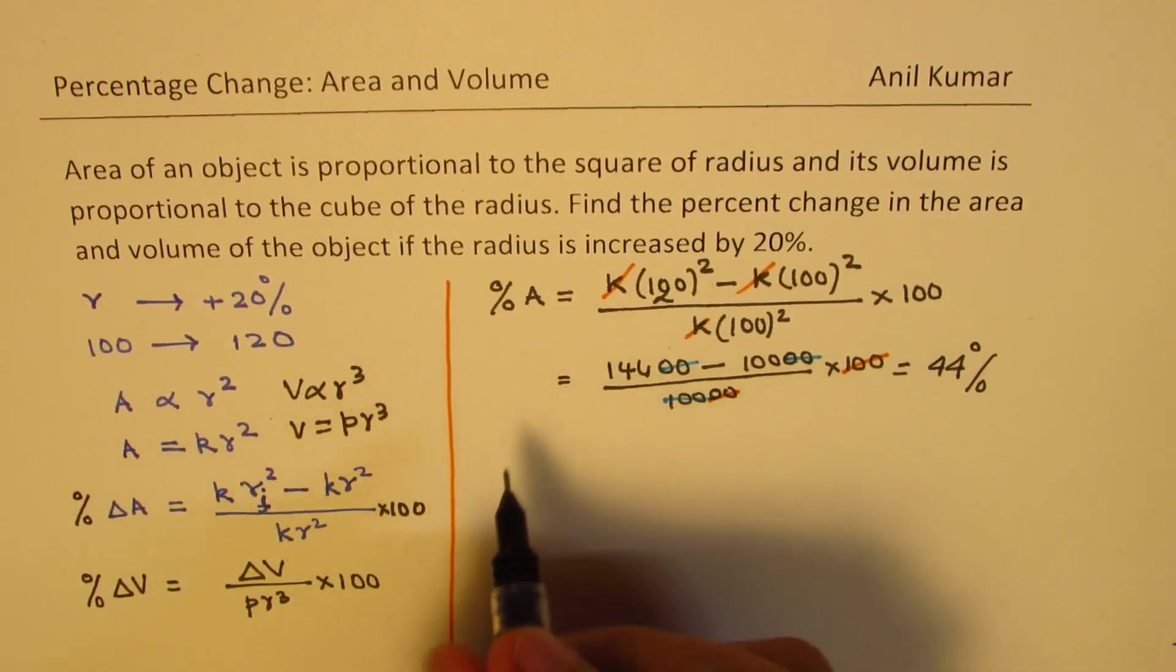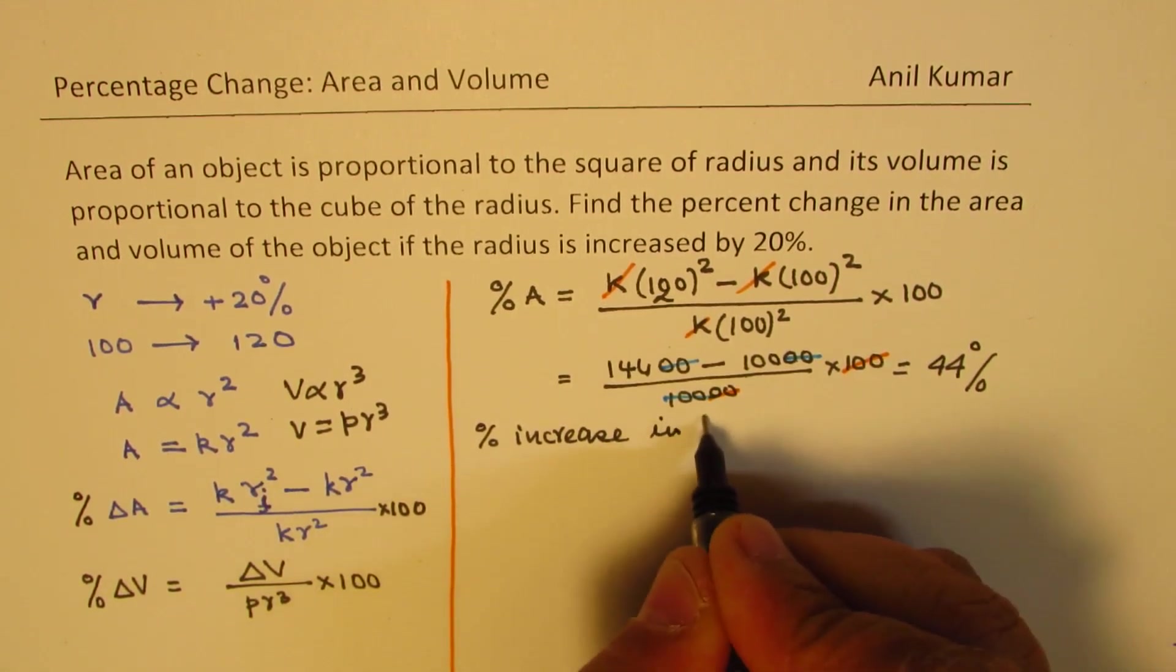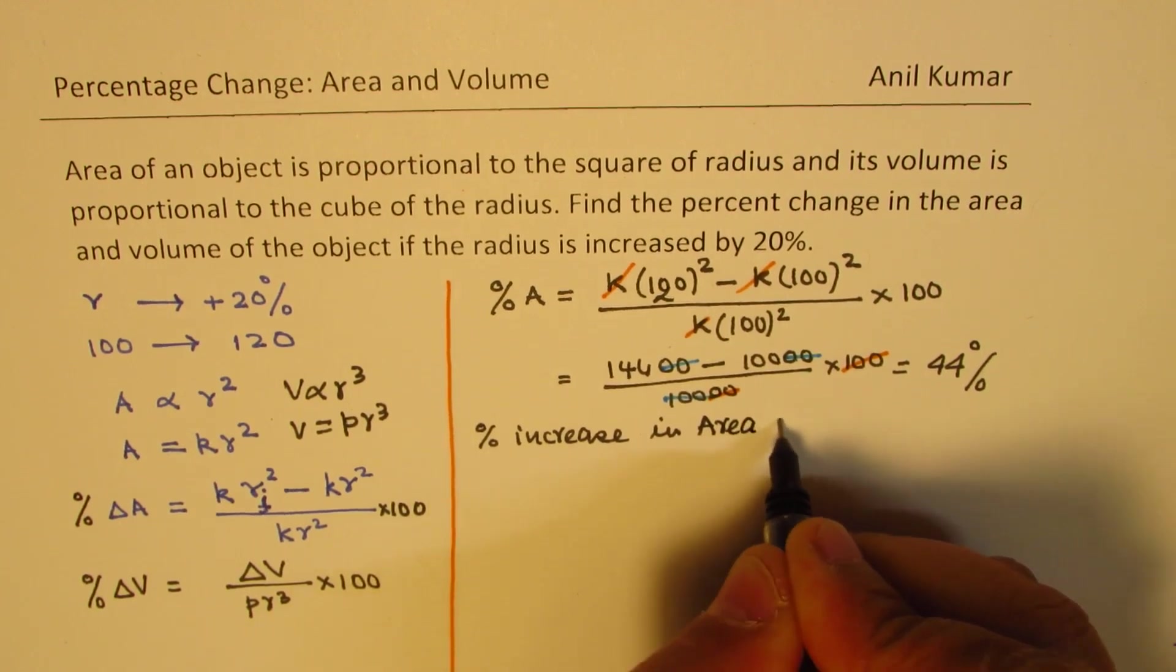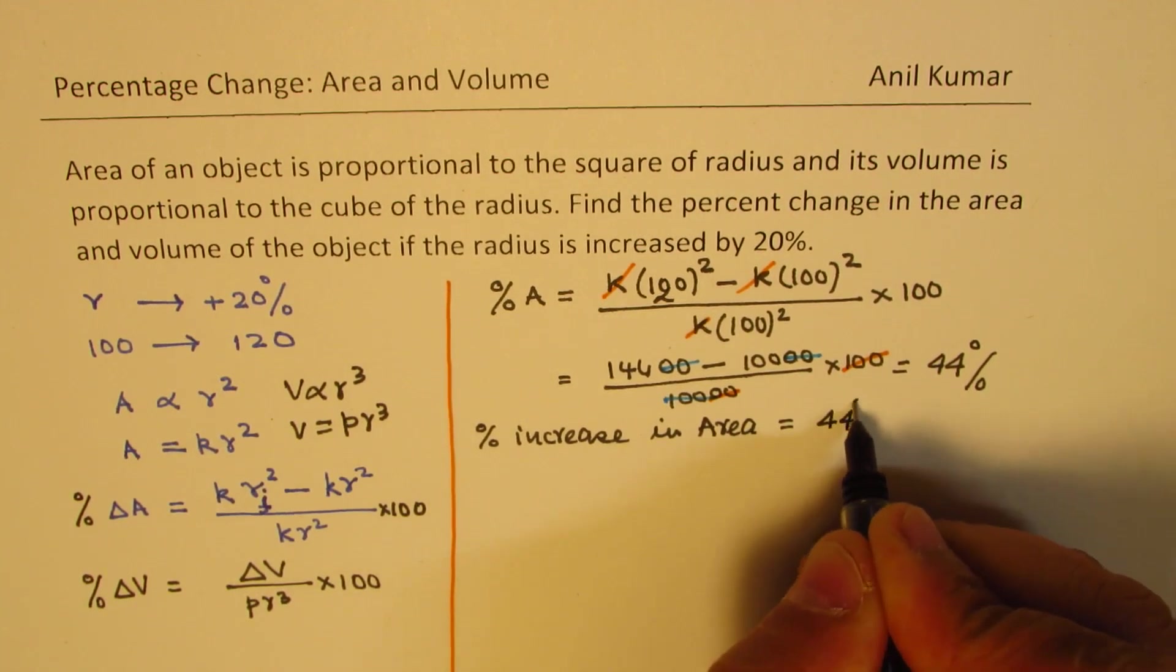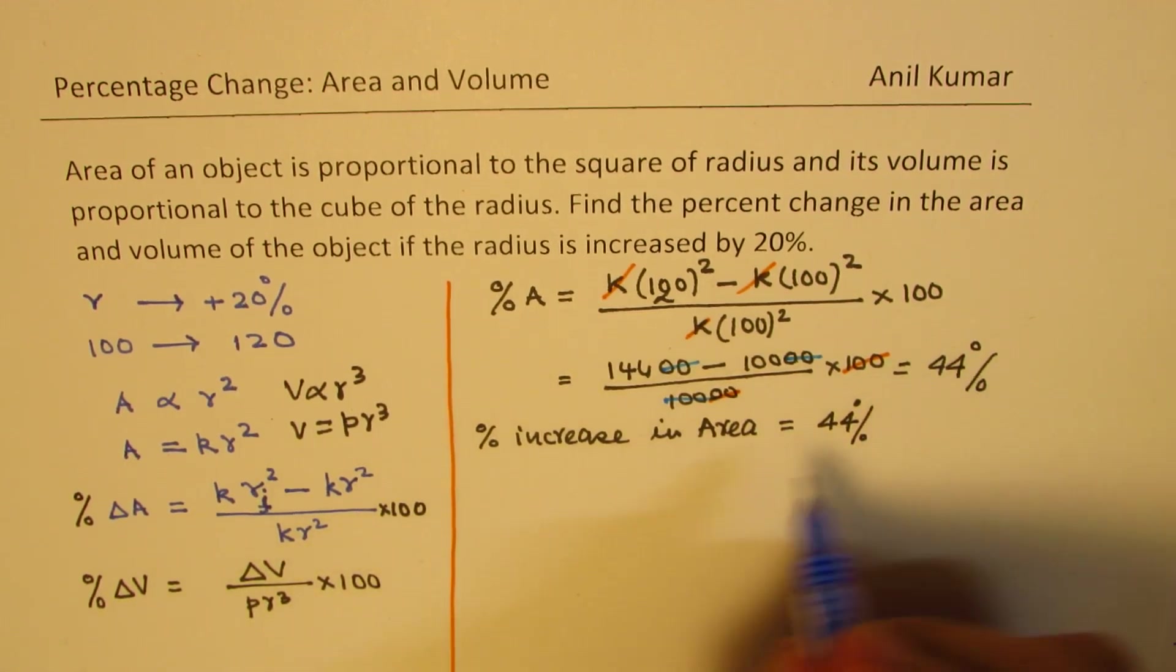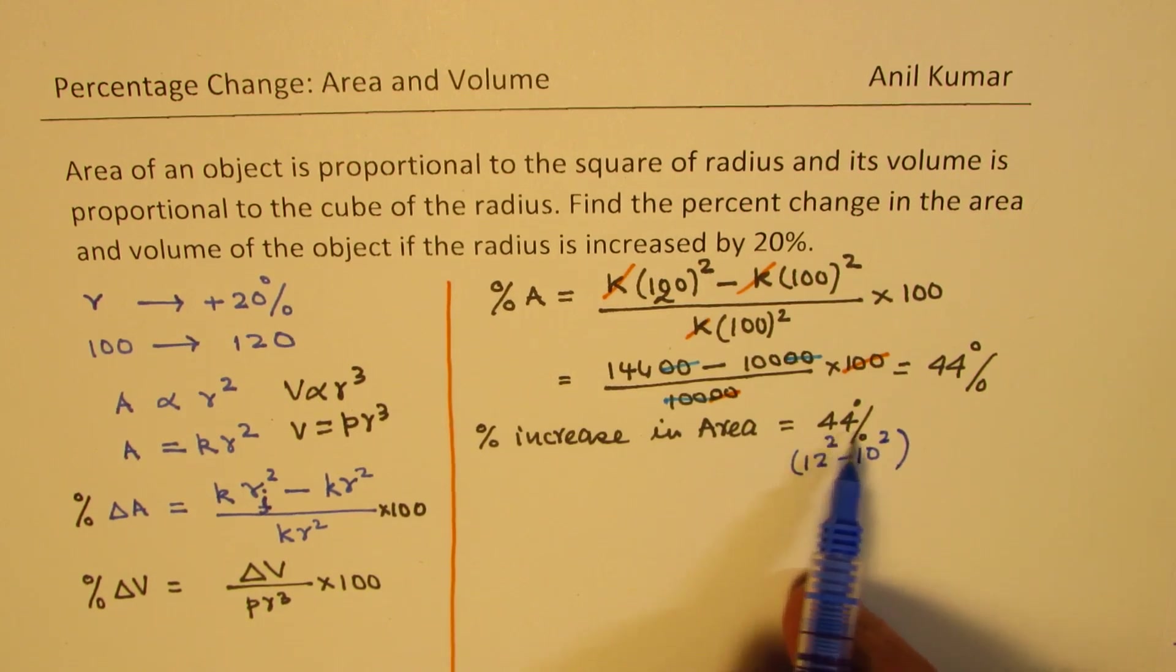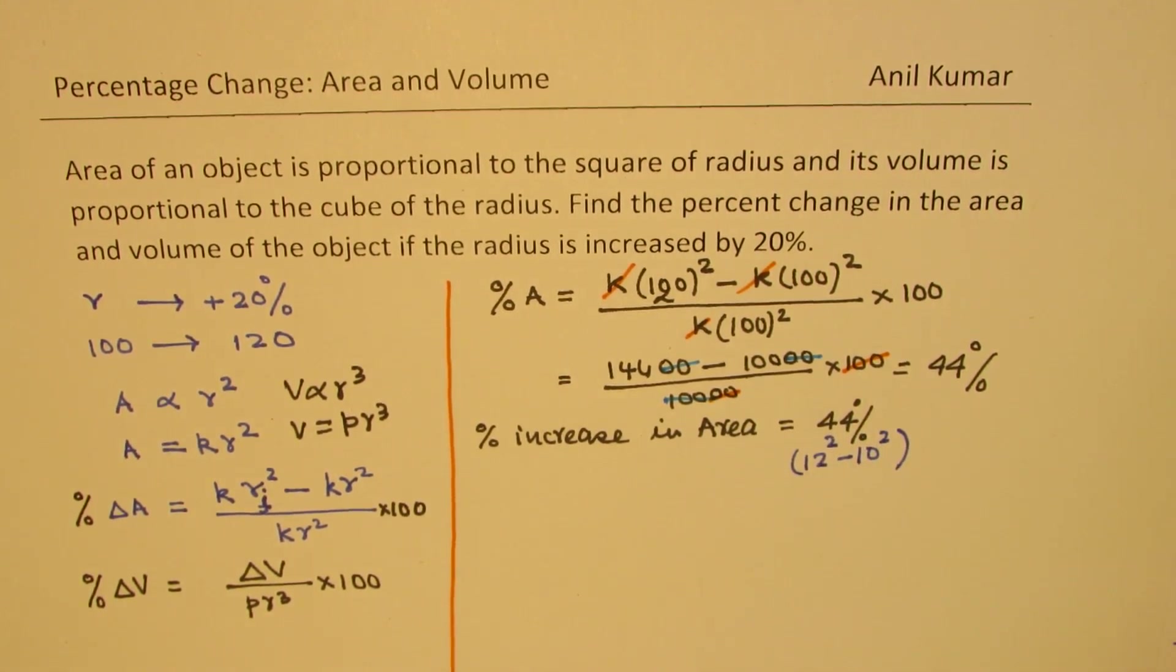So basically 12 square is 144 minus 100 gives you 44. So we can find that the percentage increase in area will be 44 percent. So a shortcut which you can see very clearly here is 12 square minus 10 square. Do you see that? So that gives you 44. So that is so easy to see.